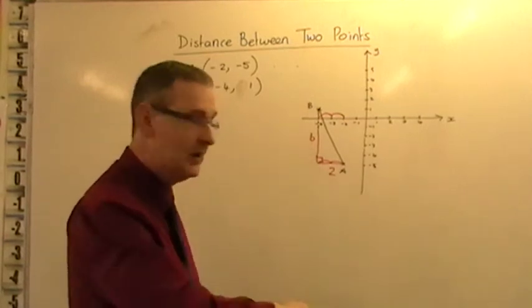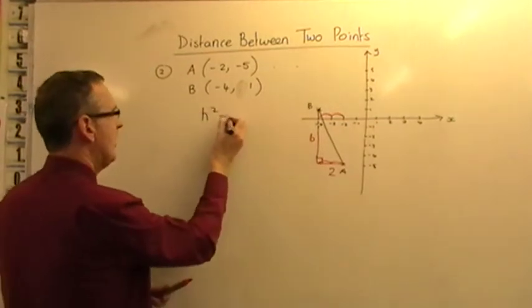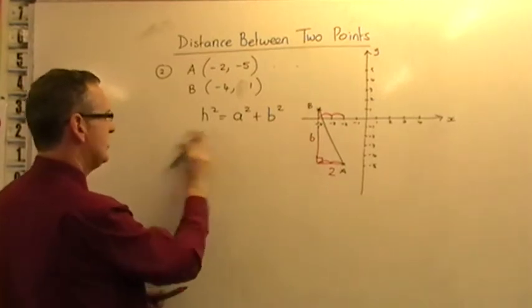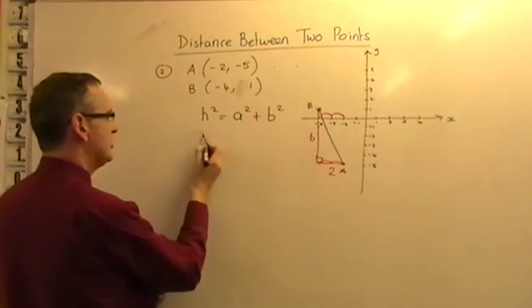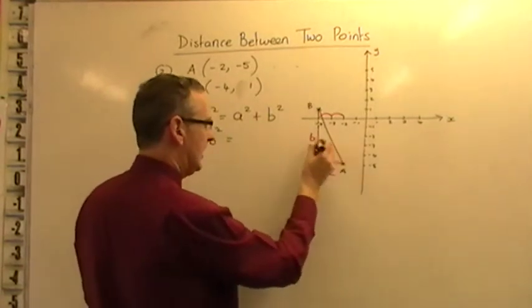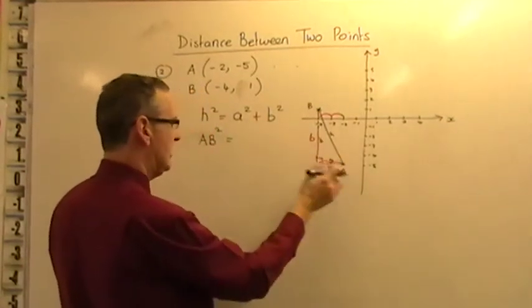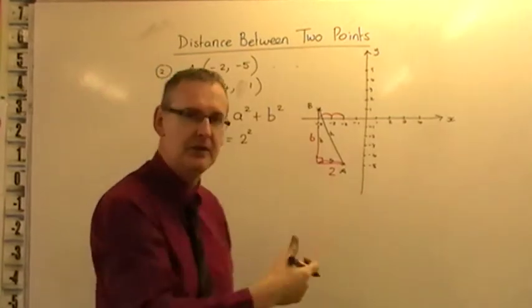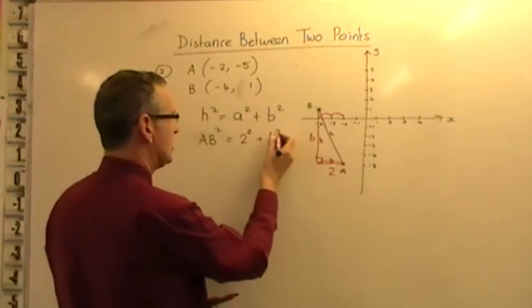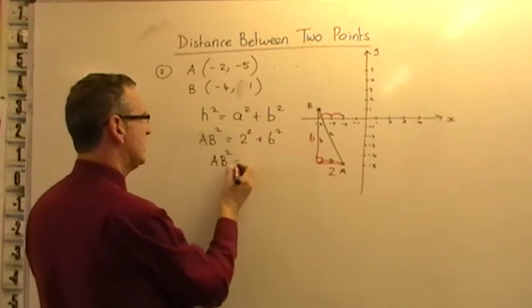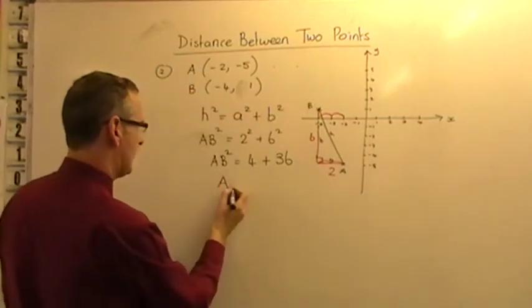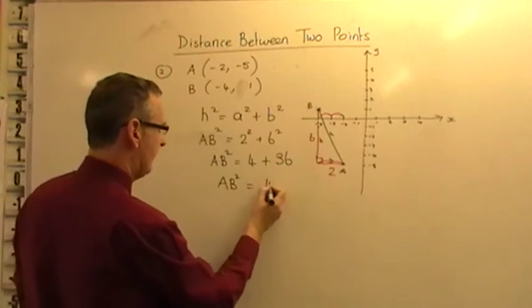Let's put those values now into Pythagoras' theorem. So H squared equals A squared plus B squared. The hypotenuse, well, I suppose to be consistent with last time, it's called AB. So I will write AB squared equals little A and little B. I'll call that little A, I'll call that little B, and that was the hypotenuse. So little A is 2, 2 squared. Remember, A and B, they could be the other way around, doesn't matter. So 2 squared plus, and then little B is the 6, 6 squared. So AB squared is equal to, 2 squared is 4, and 6 sixes are 36. We get 4 plus 36, so AB squared is equal to 40.